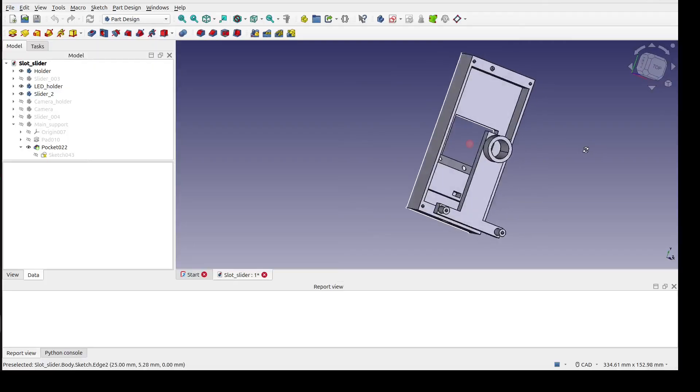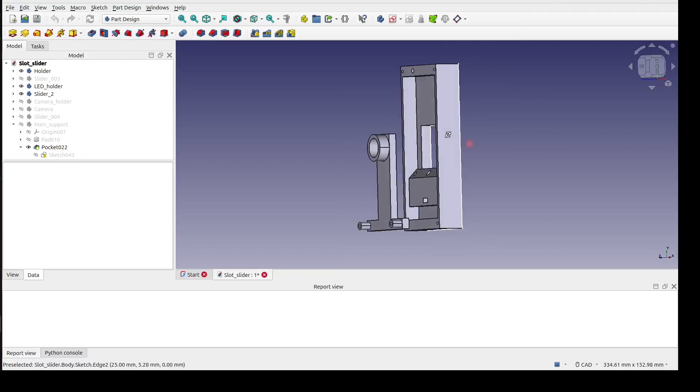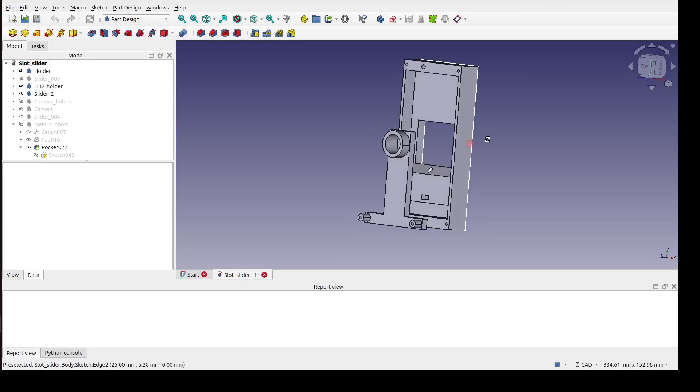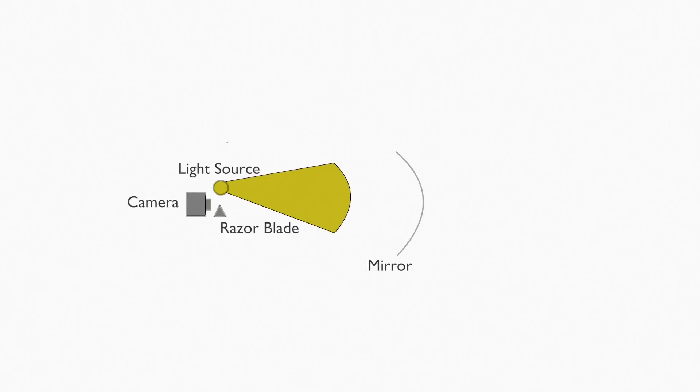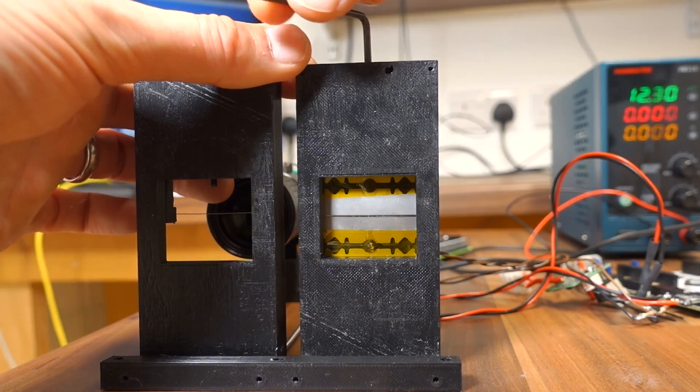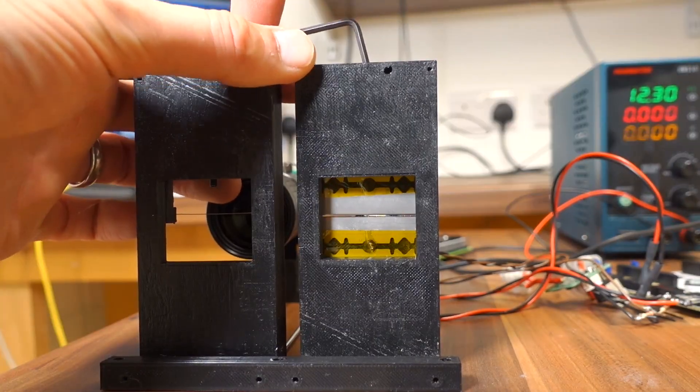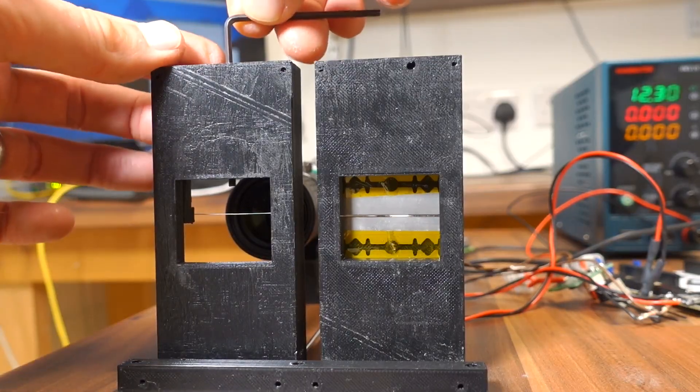Now these components are all held together by this custom rig I designed in FreeCAD. The design files are linked below. Let's follow the path of light. It starts with our LED. The light is then focused through a precise optical slit made from two razor blades. And the key is that this entire assembly is adjustable so that it can be placed exactly twice the mirror's focal length.